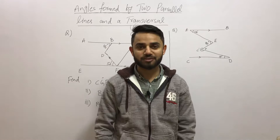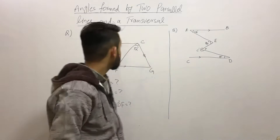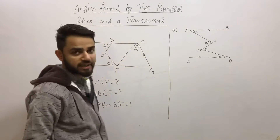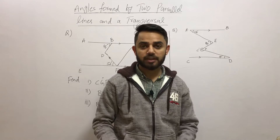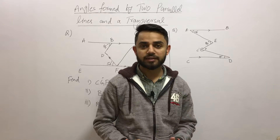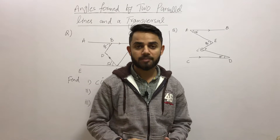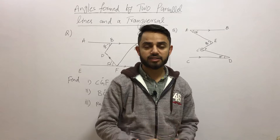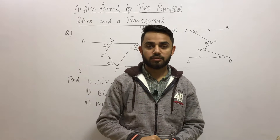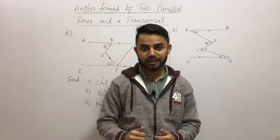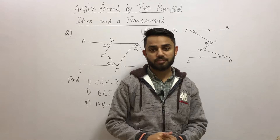Welcome to another video on my channel Master Munir. Today we are going to learn about angles found by two parallel lines and a transversal. I have one previous video on this topic where I explained in detail what types of angles we get — corresponding angles, interior angles, exterior angles, vertical angles, and opposite angles. I will link that video in the description so you can watch it first.